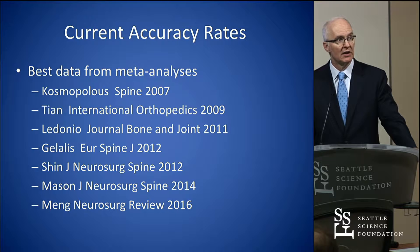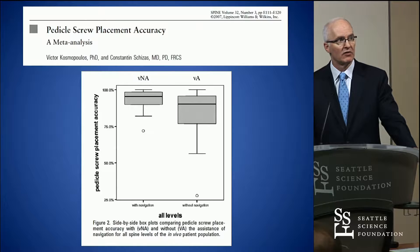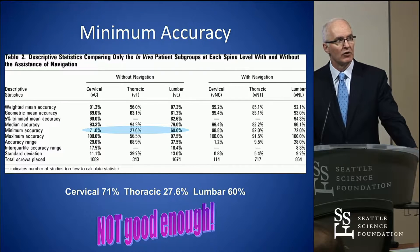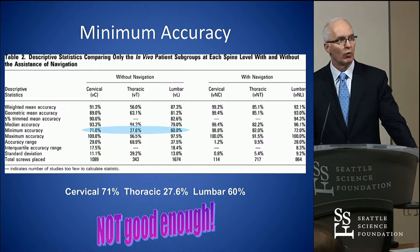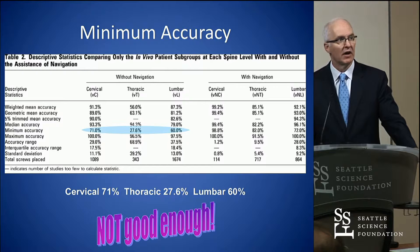Looking at current accuracy rates from the meta-analyses — I'll start with the Cosmopolis one from 2007, which is the one that got my attention. There's a little bit of difference between NAV and non-NAV. But when you look at the worst-case scenario statistically, worst-case accuracy of thoracic pedicle screw placement is 27%. I would suggest that all of us think that's not good enough.